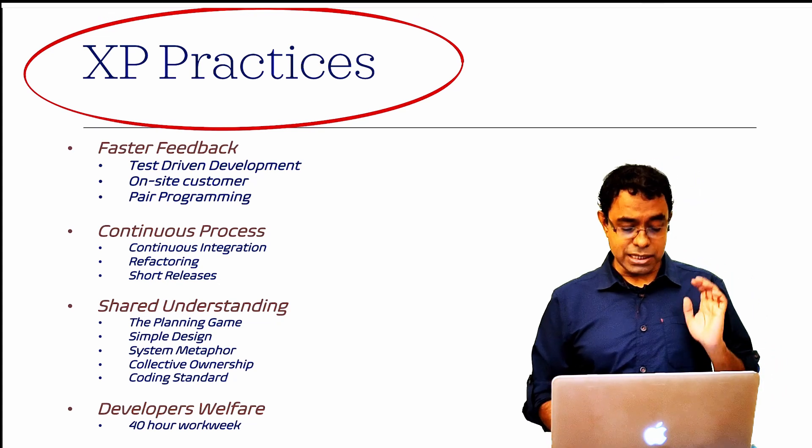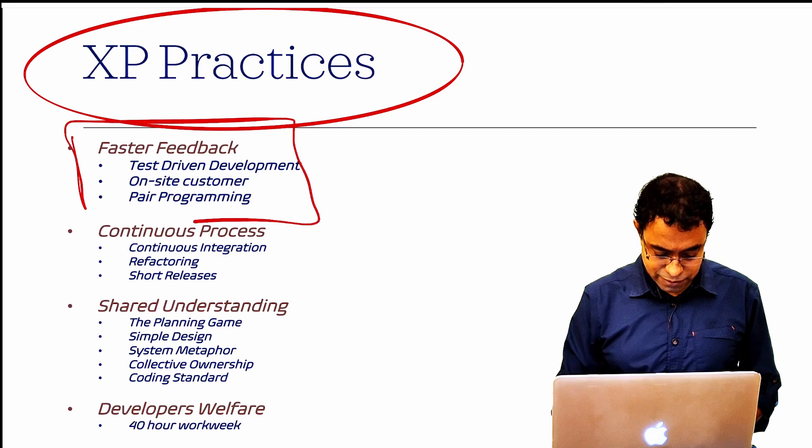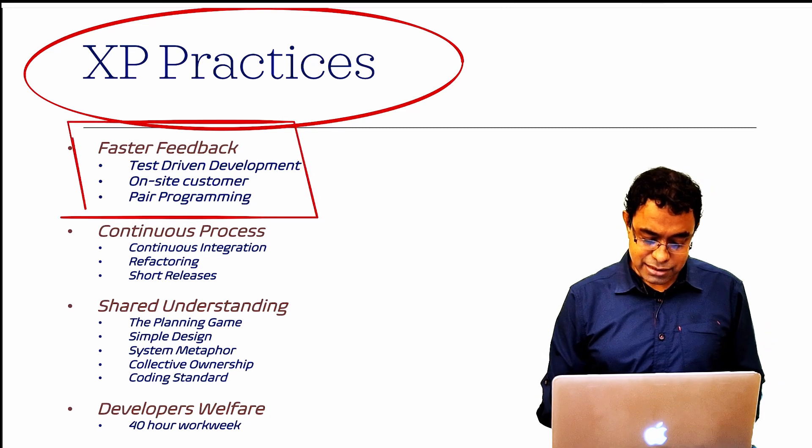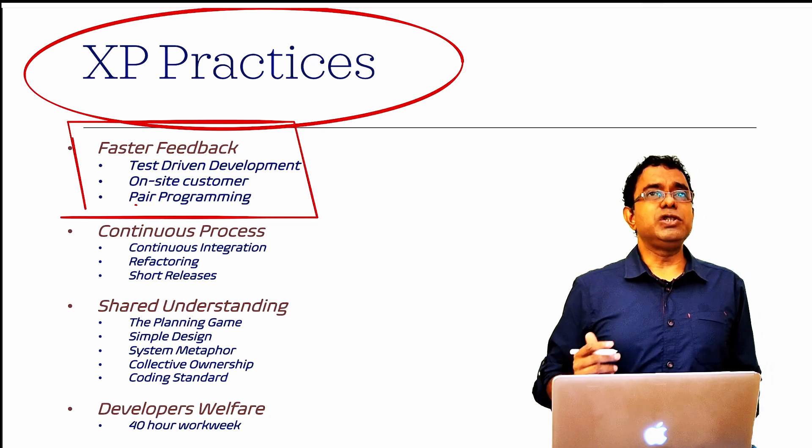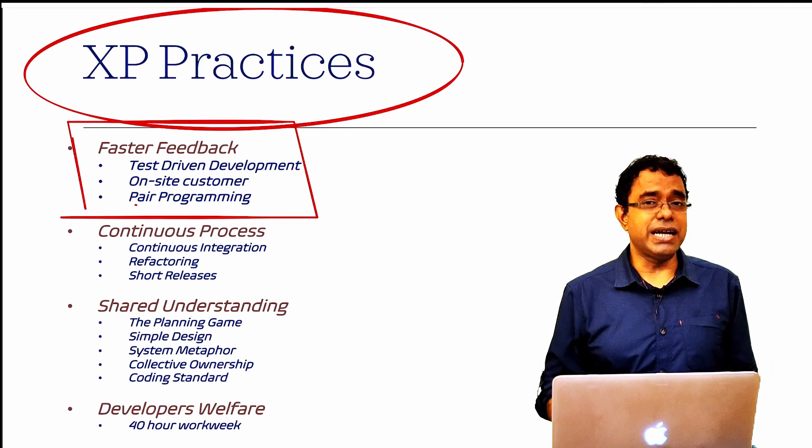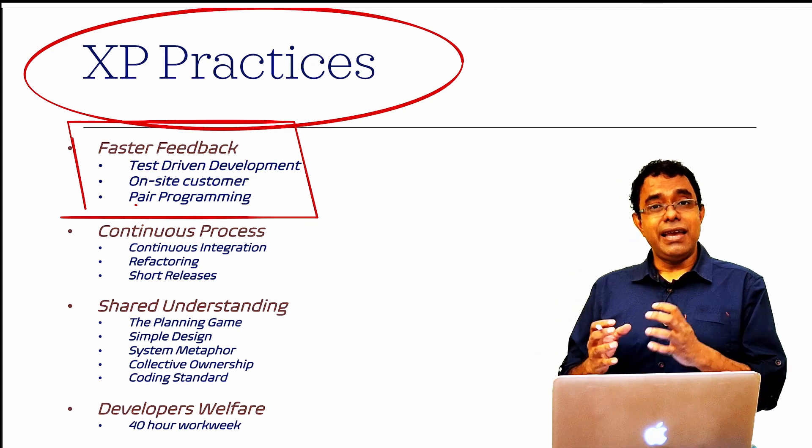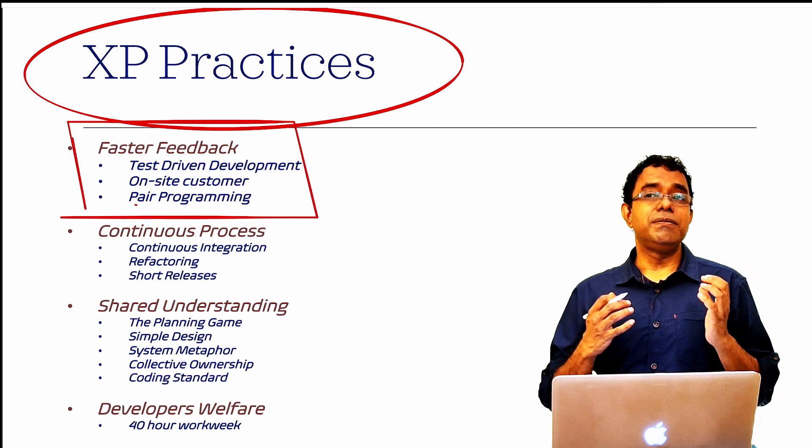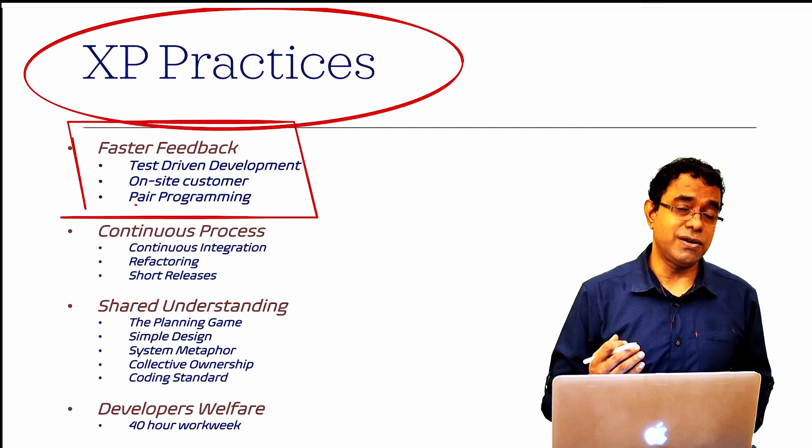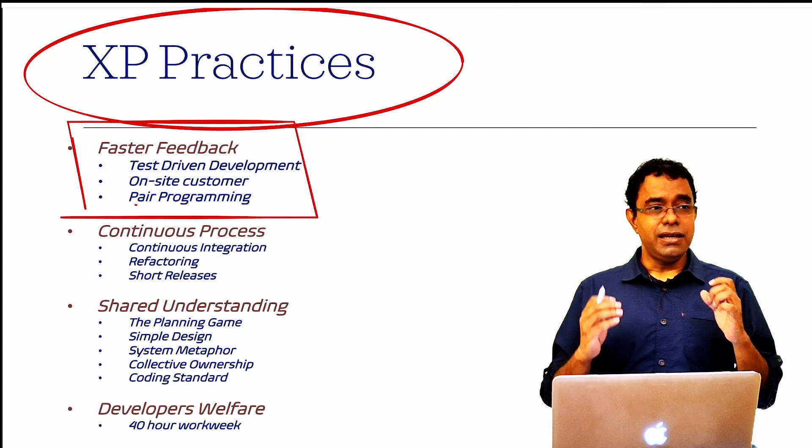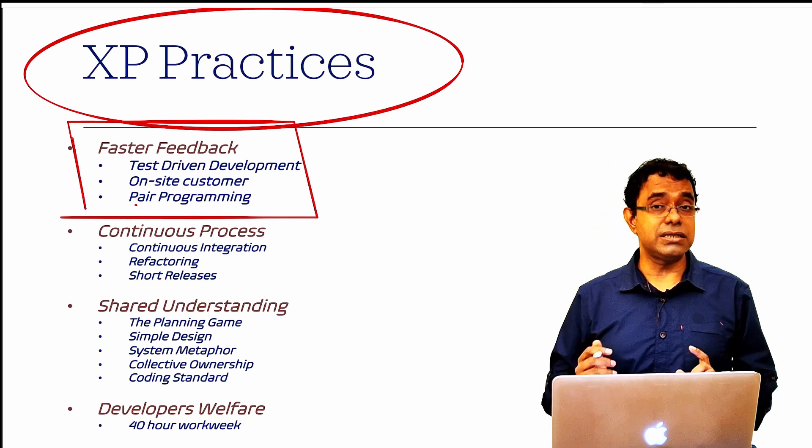This is a bit detailed, 12 set of practices and it is grouped into four categories. So first category is faster feedback: test-driven development, on-site customer, pair programming. You may not end up doing all the XP practices or you may include some of the practices which actually help the XP values. But there are something like test-driven development you can do without any additional cost and this is something you must try. If you do not know what is test-driven development, I will highly recommend you to see my video on test-driven development.